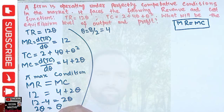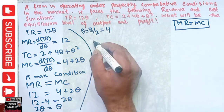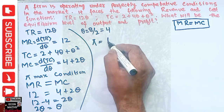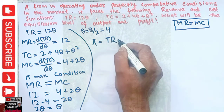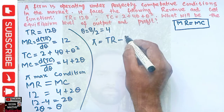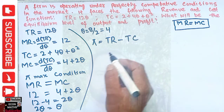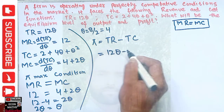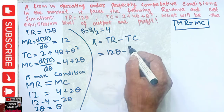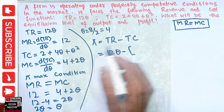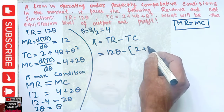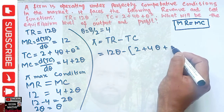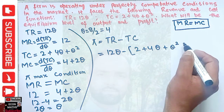Now we have to find the profit. Profit is equal to total revenue minus total cost, where total cost is 2 plus 4Q plus Q squared.